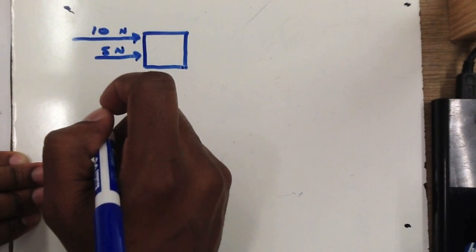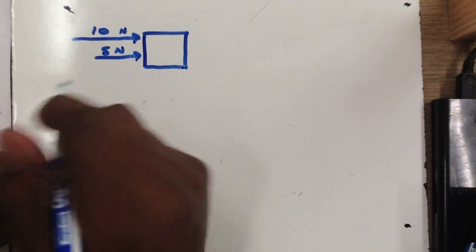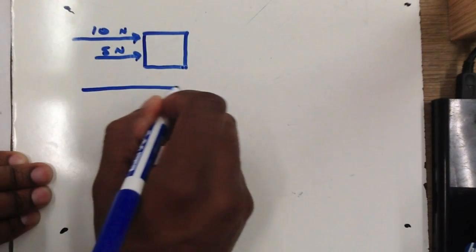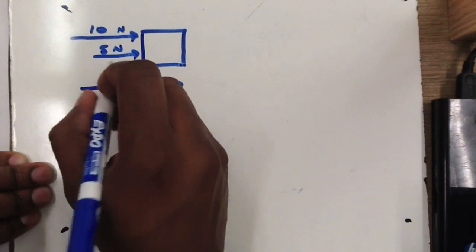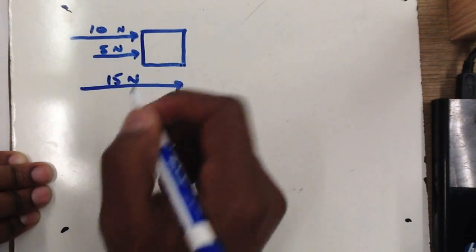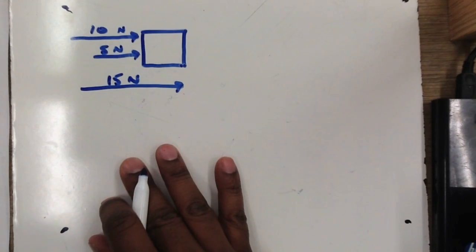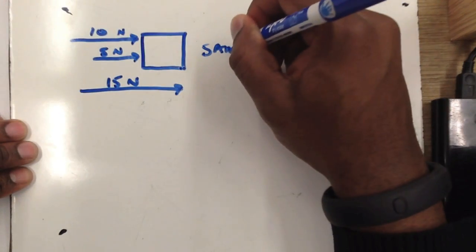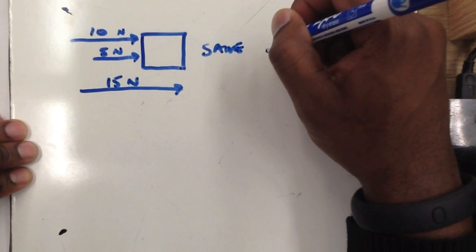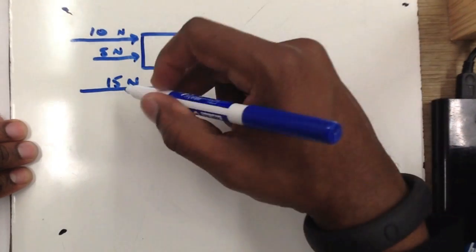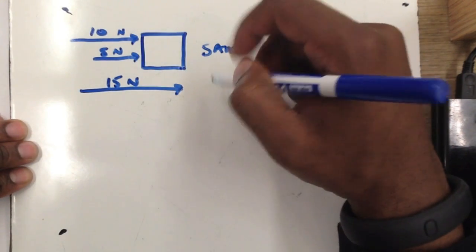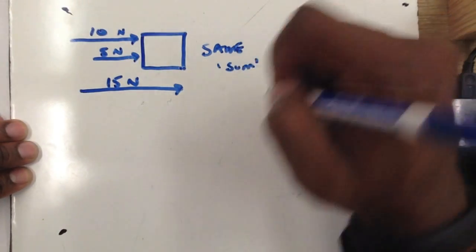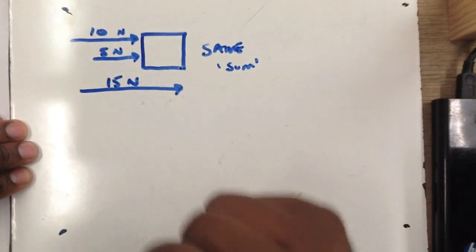...the net force — which is the combination of all forces acting on an object — will be in the direction of those forces. In this case our net force would be to the right, and it would be 15 newtons, because forces combining in the same direction have a net force in that same direction and the net force is the sum of all the forces acting on the object.